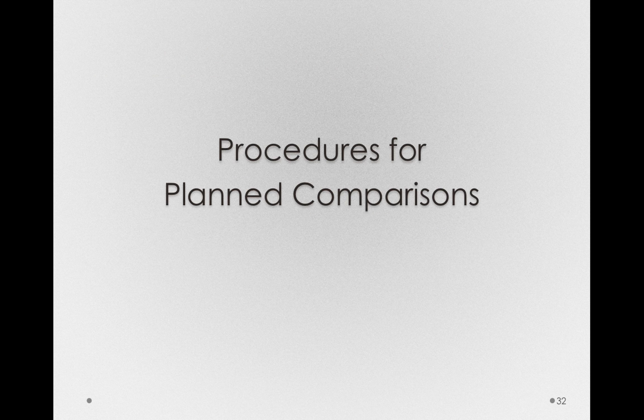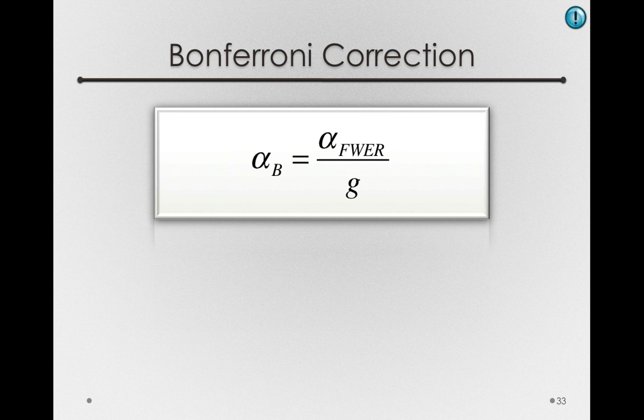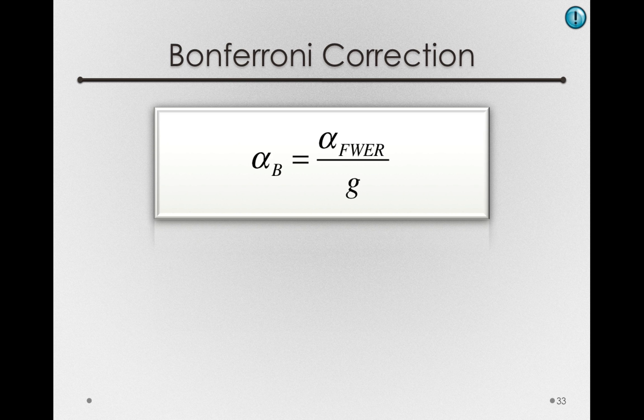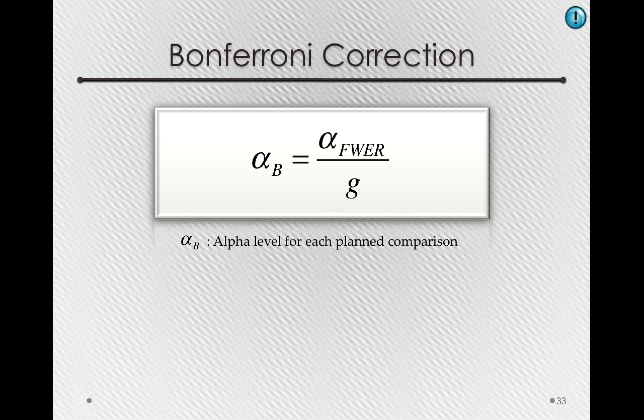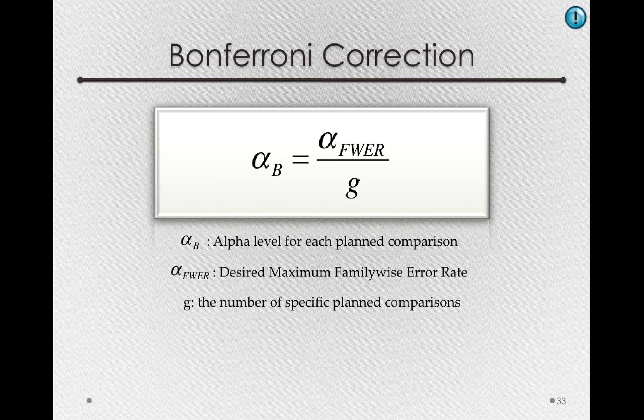Let's start with procedures for planned comparisons. Perhaps the most common is known as a Bonferroni correction, which is a very simple and elegant correction that you can carry out without doing any additional work. The Bonferroni correction states that the alpha level for each planned comparison should be equal to the desired maximum family-wise error rate divided by the number of specific planned comparisons you are making.